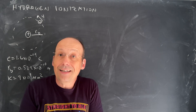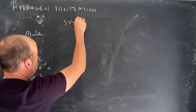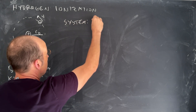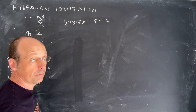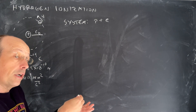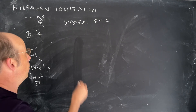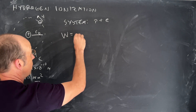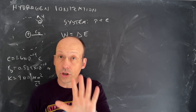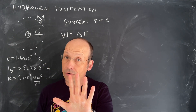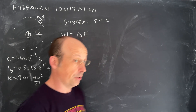So this is an energy problem — we're trying to calculate the energy. Our system is the proton plus the electron. That means I want to look at the changes in energy of the system, and the changes in energy would be equal to the work. So the work is going to be equal to the change in energy of the system. I'm going to show you later — we're going to deal with the kinetic energy too — but let's just start with the change in electric potential energy.